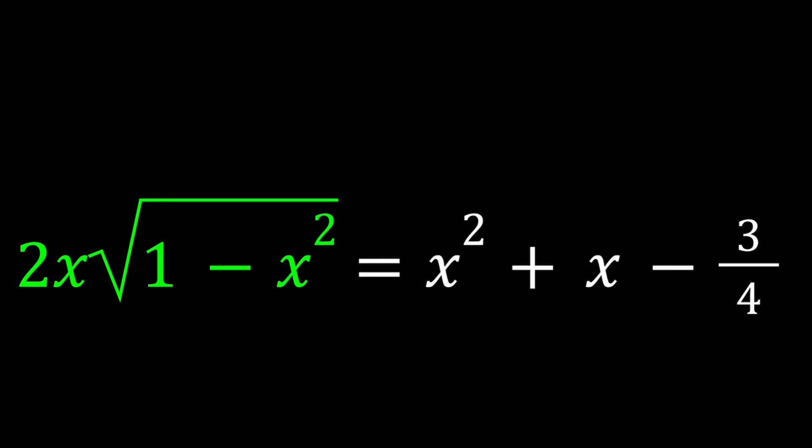Hello, everyone. In this video, we're going to be solving a nice homemade equation. We have 2x times the square root of 1 minus x squared, and that equals x squared plus x minus 3 fourths. And we're going to be solving for x values.